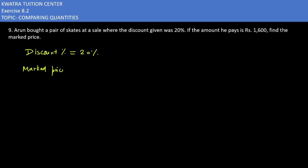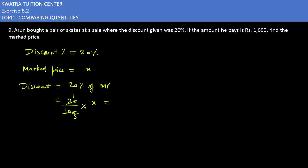Let's say the mark price is Rs. X. The discount is 20%. Discount is 20% of mark price, which is 20 over 100 times X, giving us X over 5. So discount equals X/5.